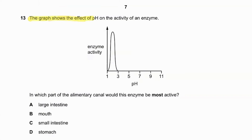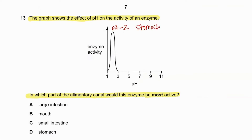Question number thirteen: the graph shows the effect of pH on the activity of an enzyme. In which part of the alimentary canal would the enzyme be most active? The enzyme is most active at a pH of two, which refers to the stomach. So 13D — stomach — is the answer.